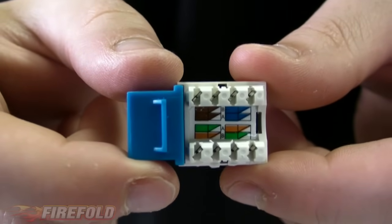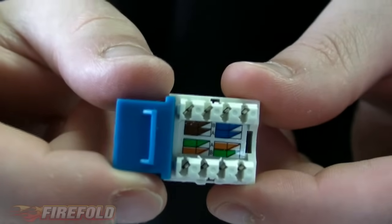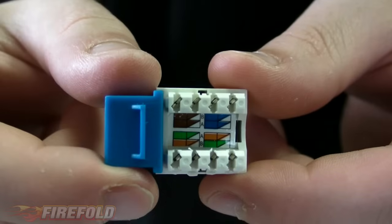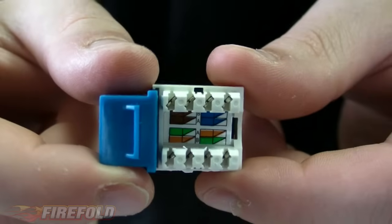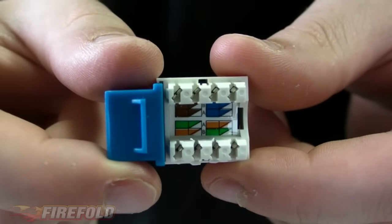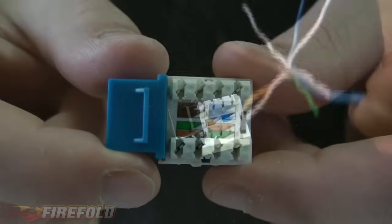What you'll notice next about your Cat5 keystone jack is there's eight pairs of colors inside of it. What does this mean? Well, there's an outside pair, which is B, as you can see on the top, on the very bottom there. And there's inside pairs, which are A. A is only used in very special circumstances. The majority of cables today are B.